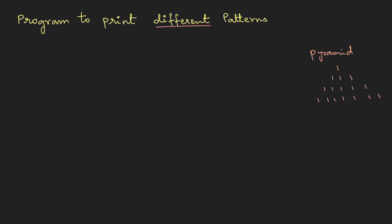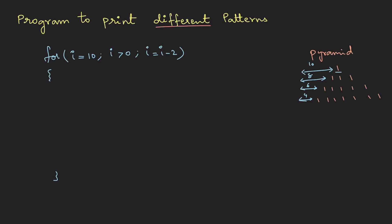Now let's do the pyramid pattern. If you observe, there's a space before printing the first number and the space slowly decreases. For this, I'll use a for loop where i starts at 10, iterates while i is greater than 0, and decrements by 2 each time — so 10, 8, 6, 4 and so on. This outer loop handles the new lines.